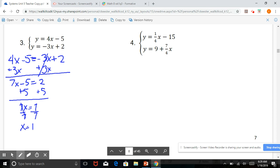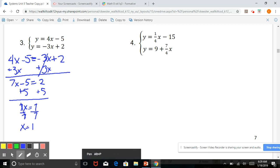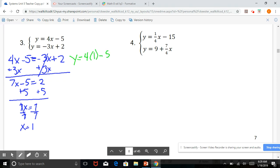So remember that is only part of the answer. We need the whole solution, so both the x and the y. So now we're going to substitute x back into both equations to find the y value. So we have y equals 4 times 1 minus 5. So y equals 4 minus 5. Therefore, y equals negative 1.